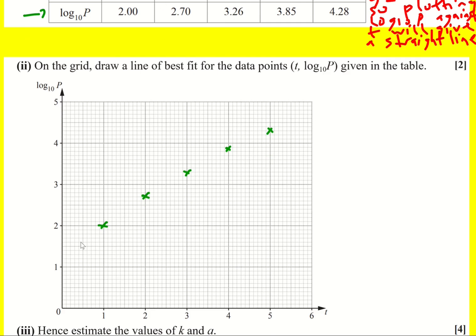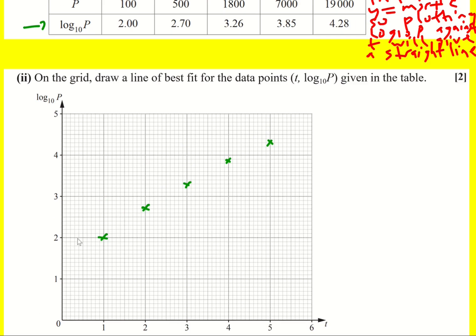It's all about line of best fit, just trying to get the same number of points either side. Technically we should only make predictions within the data range but because we're trying to find k and a and they're going to relate to the y-intercept and the gradient, I'm going to go all the way to the end. Maybe I go with something like this. There are a range of values that are accepted. That's pretty good I'd say.